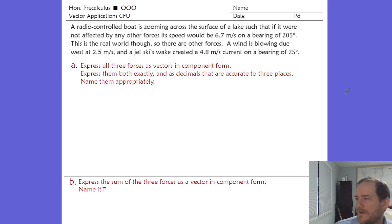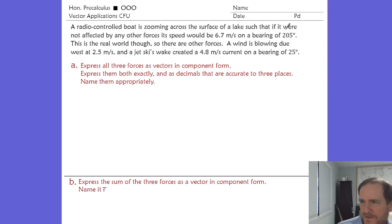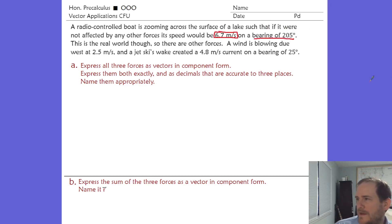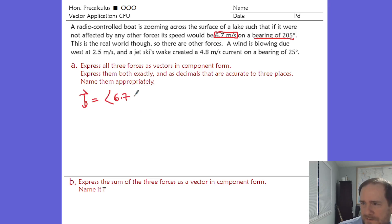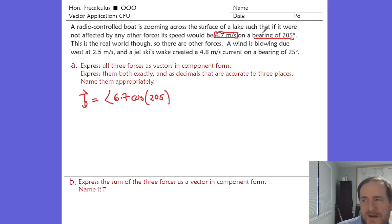Now the boat problem. Part A says express all three vectors in component form. A radio-controlled boat is zooming across a lake such that, if not affected by other forces, its speed would be 6.7 meters per second on a bearing of 205. I'll call that vector B for boat. That's 6.7 magnitude — but you can never use the bearing angle directly, that'll always be wrong.